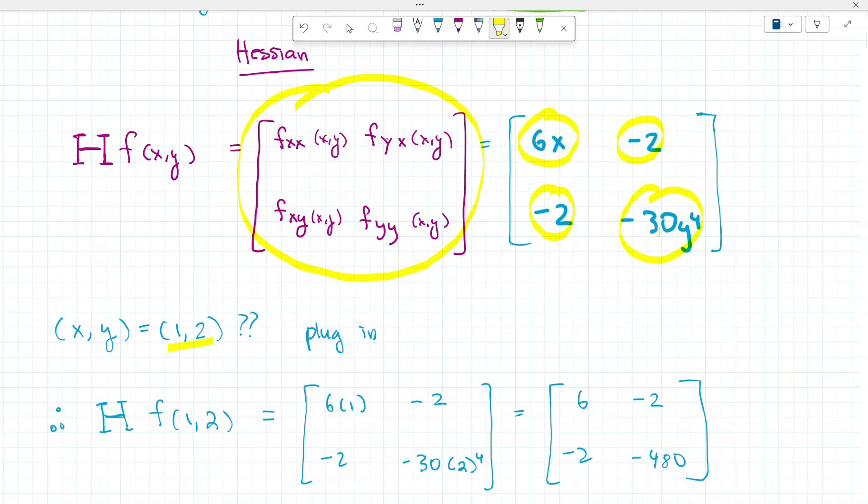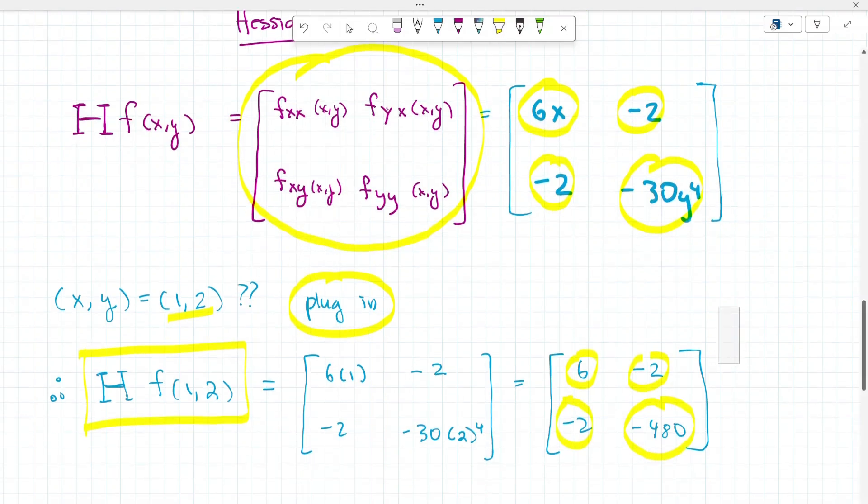How do we evaluate it at a point? Well, all we have to do is just plug in that point. This would be the notation. You'd write this bolded H of f, and then your point, and then you're simply just going to plug that in wherever the x and y values are. As a result, we end up with 6, -2, -2, and -480.